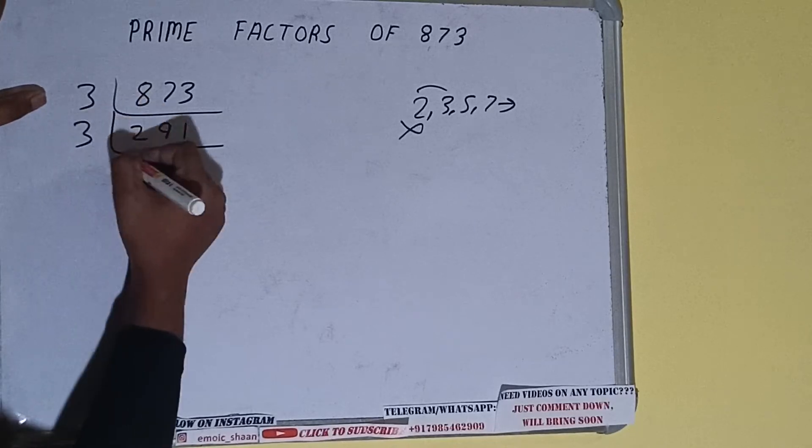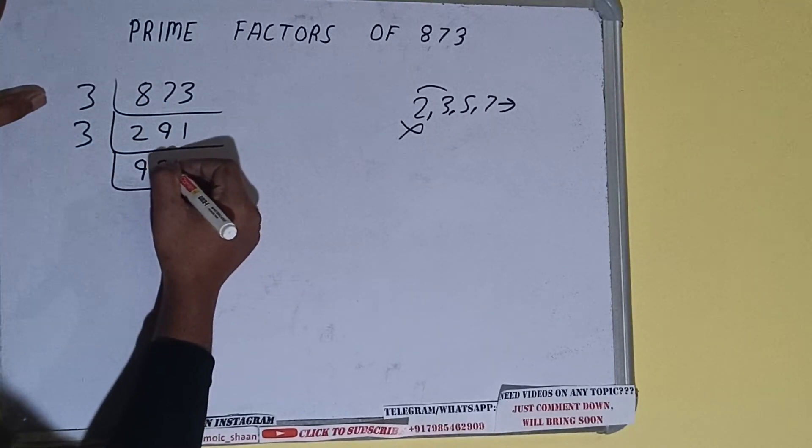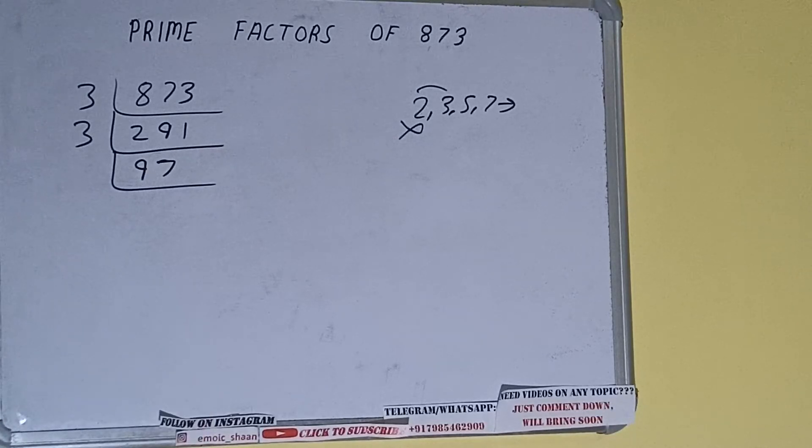So let's divide. Three into nine is zero, carry twenty-seven, three into seven is zero, carry twenty-one. We'll be having ninety-seven, and ninety-seven is further not divisible by three.